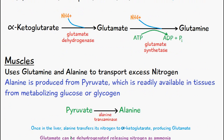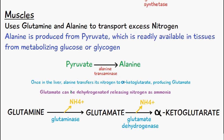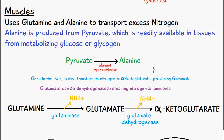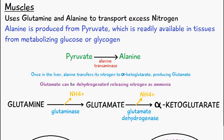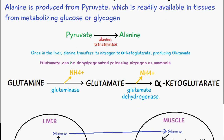In the muscles, glutamine and alanine are used to transport an excess amount of nitrogen. Alanine is produced from pyruvate, which is readily available in the tissues from metabolizing glucose or glycogen. Pyruvate is converted into alanine via alanine transaminase.